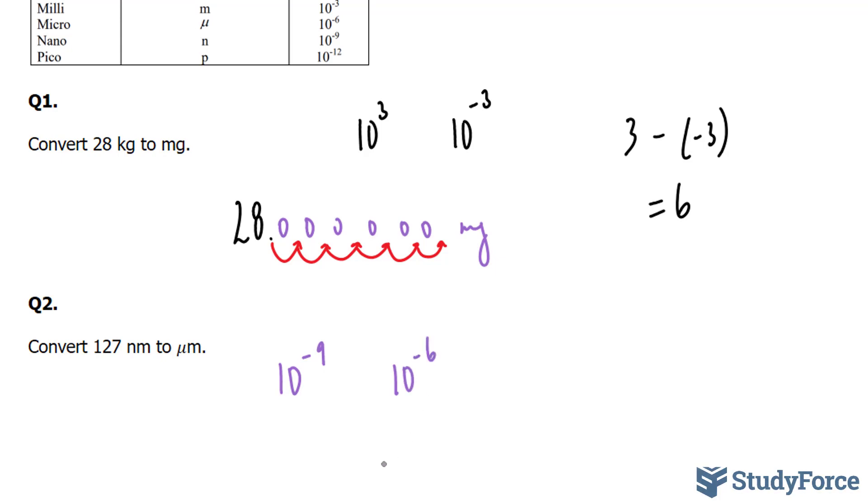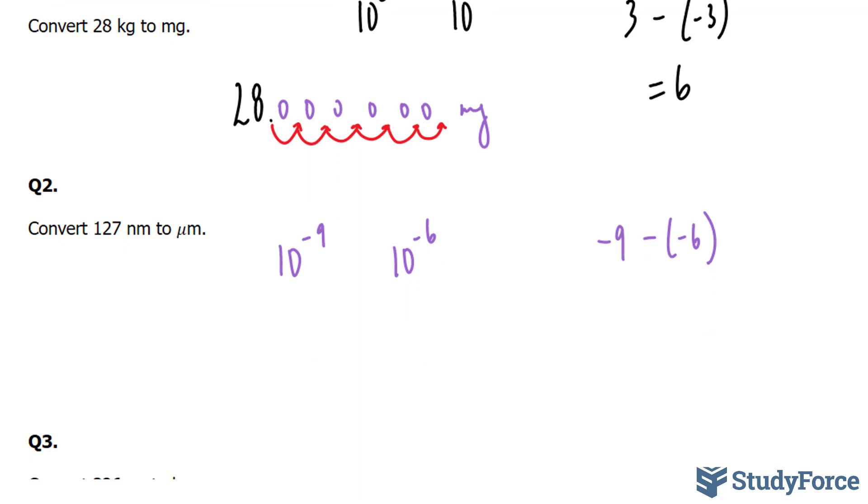Now since we are going from nanometers to micrometers, we'll be subtracting minus 9 from minus 6. And if we do that, we end up with negative 3. Now what this negative 3 tells us is that our number 127 decimal, that decimal will move to the left 3 times. So we end up with a number that looks like this, 0.127 micrometers.